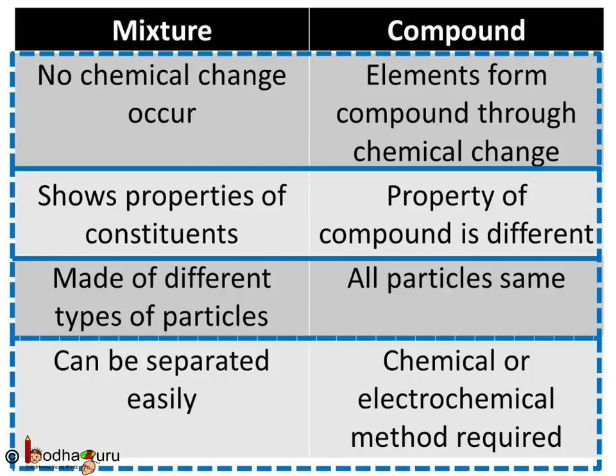A mixture is made of different types of particles, while all the particles of a compound are the same. The components of a mixture can be separated through physical methods, while the constituents of a compound can only be separated by chemical or electrochemical reaction. So now you know a pure substance can either be an element or a compound, having a fixed composition, while mixtures do not have a fixed composition. That's all for now. Bye-bye.